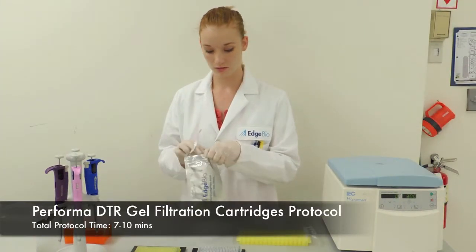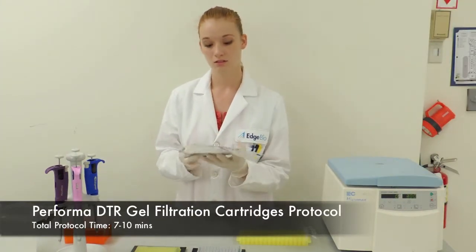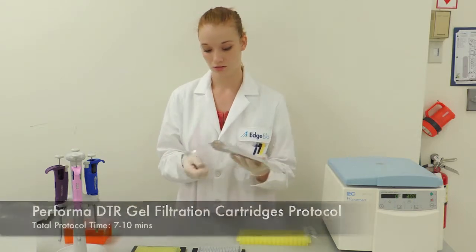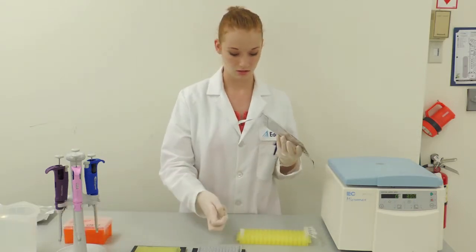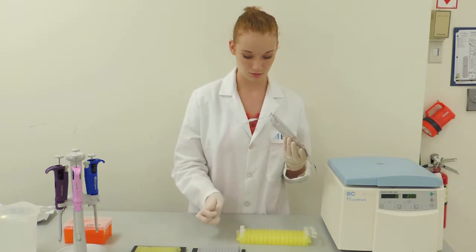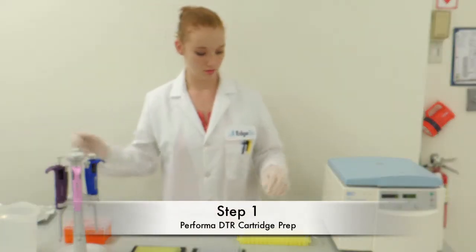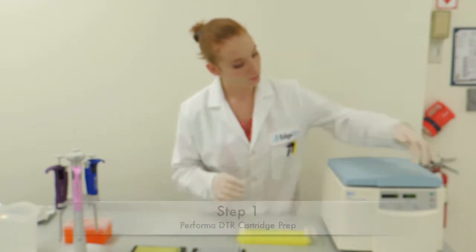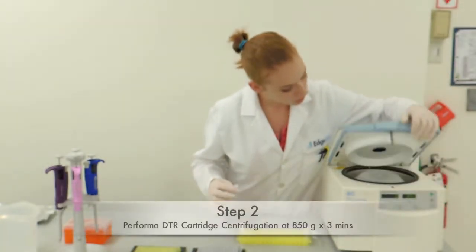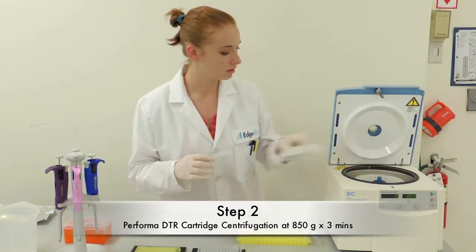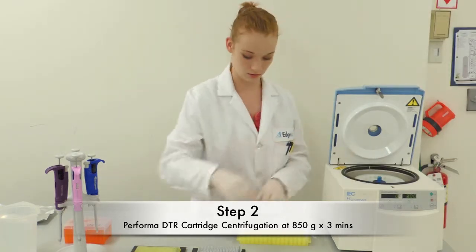The procedure for our Performa DTR cartridges is very similar to that of the plates. The total processing time for this protocol is also 7 to 10 minutes. The first step requires removal of the desired amount of cartridges from the foil pouch. The cartridges are then moved to a centrifuge and spun at 850 Gs for 3 minutes.